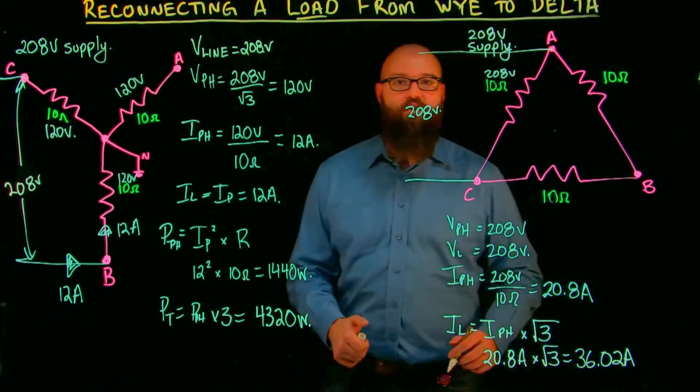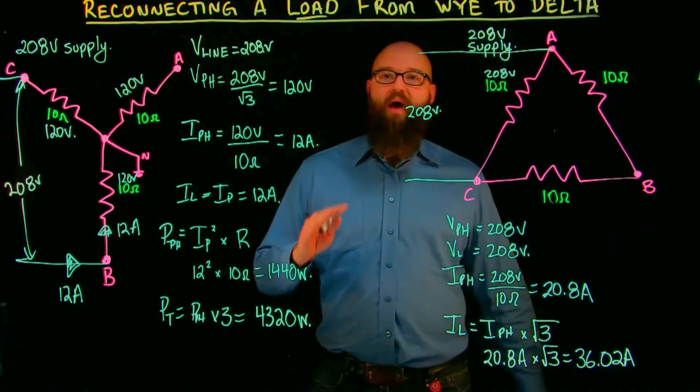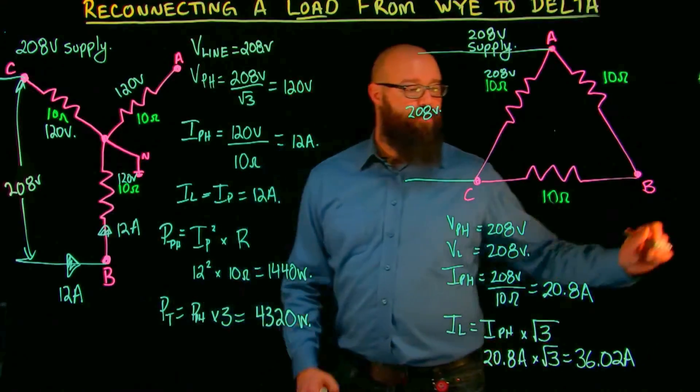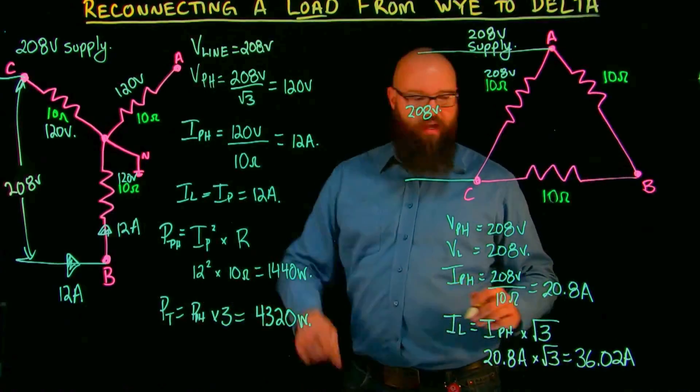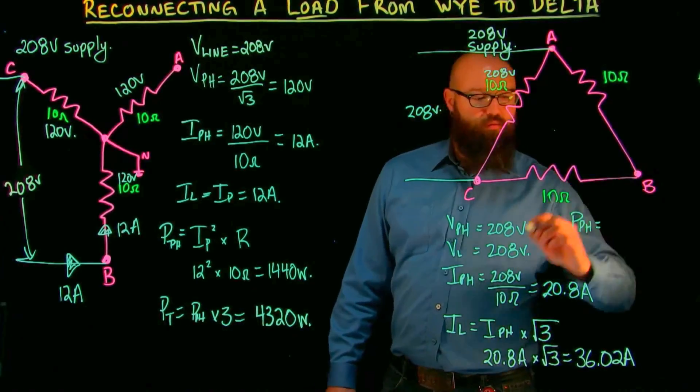So the last thing we're going to do with our delta circuit: we're going to figure out what our power total dissipated by this load is when it's connected in delta. So same formulas. We're going to look at, we have power of the phase equals the current through the phase, which in this case is 20.8, squared times the impedance of the phase, which didn't change, 10 ohms.